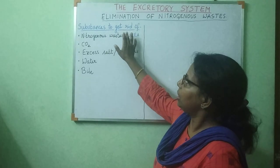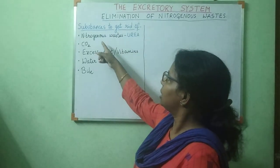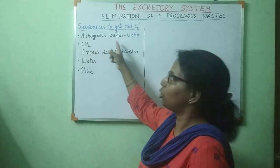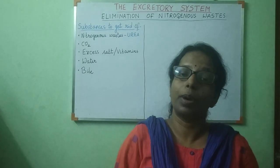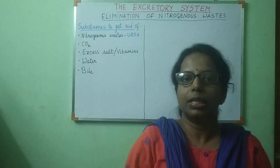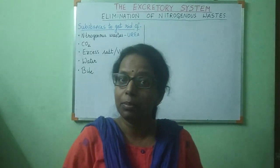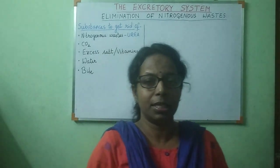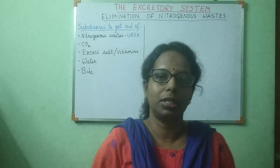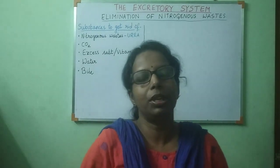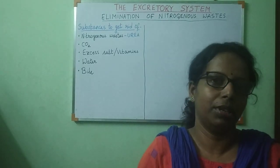Substances we need to get rid of from our body: number one, and most important, is nitrogenous wastes. Various types of nitrogenous wastes are produced by different living organisms. Some produce ammonia as the chief excretory waste, some produce uric acid, but we human beings produce urea as the chief excretory waste.